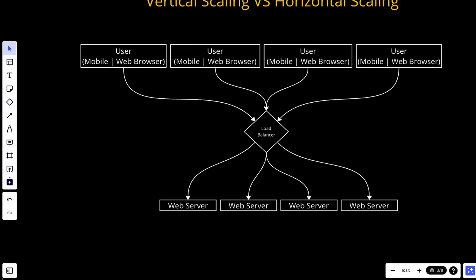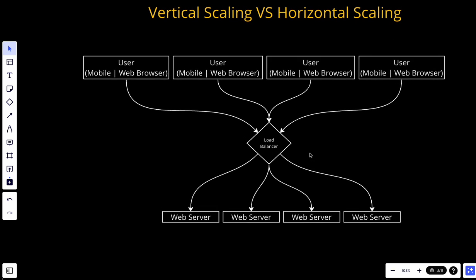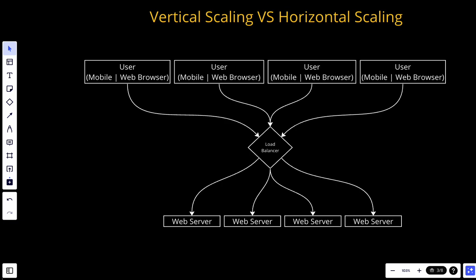A load balancer is a crucial component in modern computer networking and web hosting. It helps distribute incoming network requests evenly between web servers, and also application requests across multiple servers or resources. The primary goal of a load balancer is to ensure that no single server becomes overwhelmed with traffic, which leads to improved system reliability, availability, and scalability. The first benefit is traffic distribution: the load balancer evenly distributes incoming network traffic among multiple servers so that no single server is overwhelmed and the workload is effectively distributed.